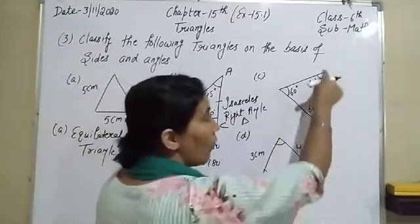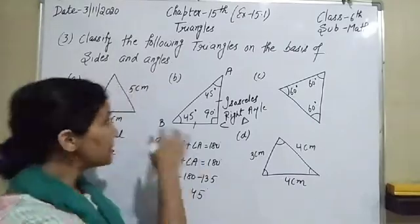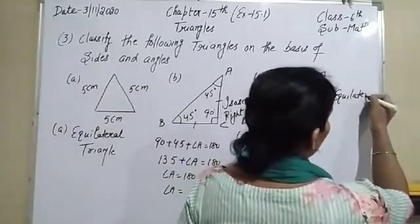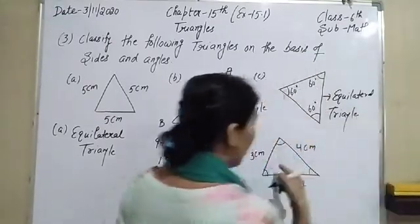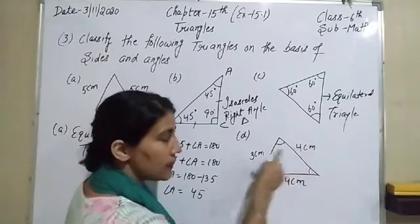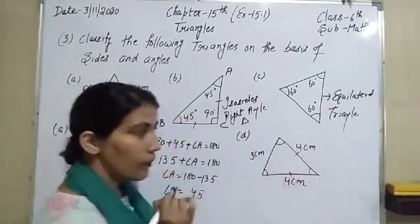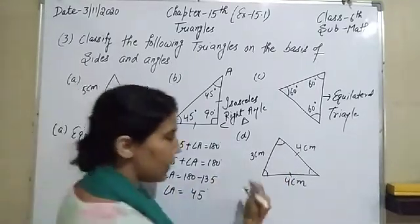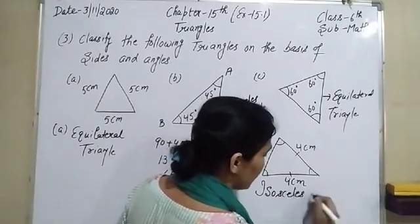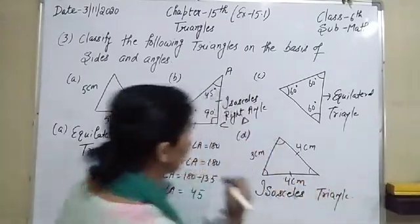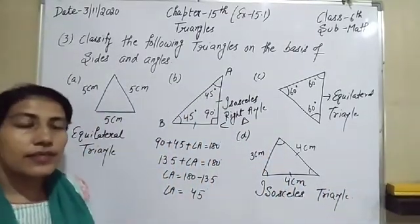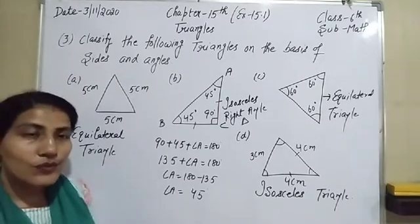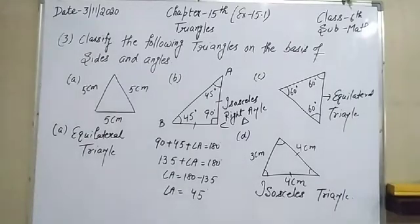In part C, all the angles of the triangle are equal, so that is also an equilateral triangle. In the last part, the sides are 4 centimeters, 4 centimeters, and 3 centimeters. Two sides are equal but the angles are not given, so if two sides are equal that means it is an isosceles triangle. That is the third question of this worksheet. For tomorrow we will discuss the remaining questions. Thank you so much everyone.